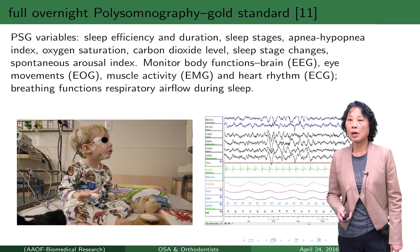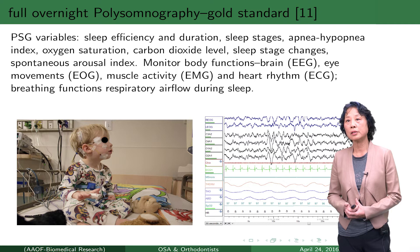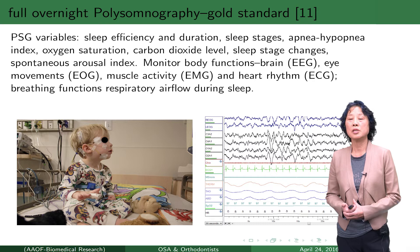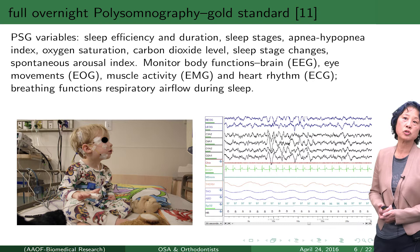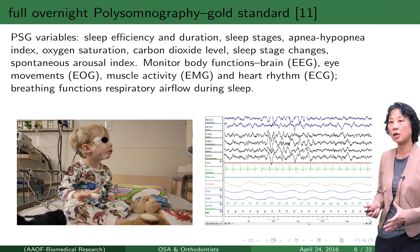I tried to learn the best way to diagnose OSA and found that overnight polysomnography is the gold standard. What is overnight polysomnography? PSG in fact measures many variables — for example, sleep efficiency, duration, sleep stages, oxygen saturation, carbon dioxide, brain functions like EEG, muscle activities, and heart rhythms, and so on.